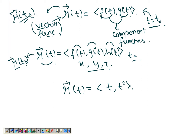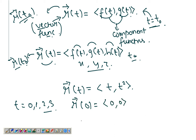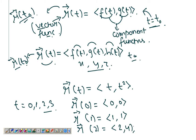To plot this function, I take some values of t: zero, one, two, and three. r(0) = <0, 0>; it's a position vector. At t=1, you get <1, 1> — again a position vector. At t=2, you get <2, 4>, and at t=3 you get <3, 9>.